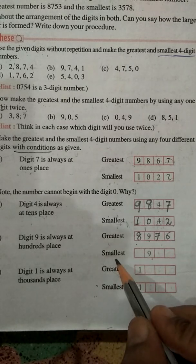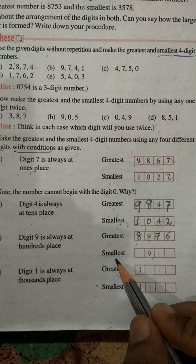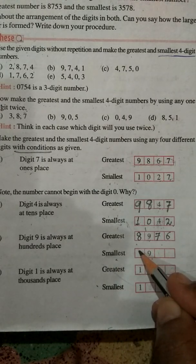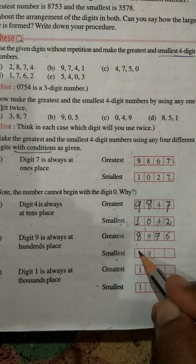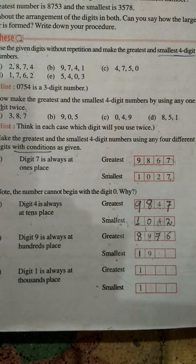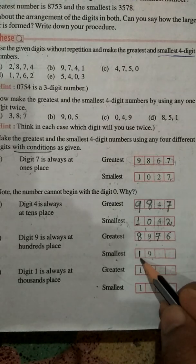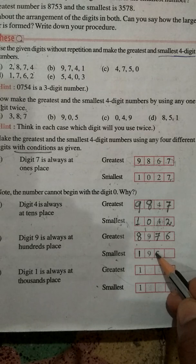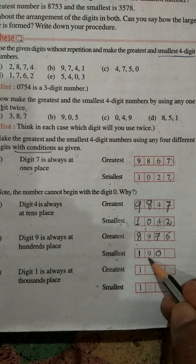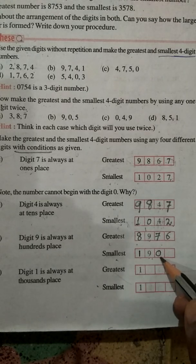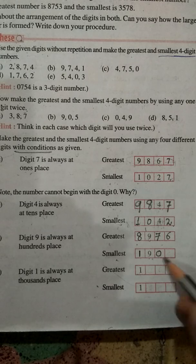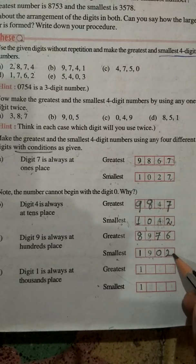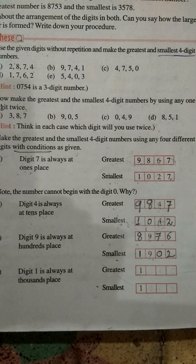To make the smallest number, we know 0 is the smallest but we can't write 0 at the thousands place. So the next number is 1. We write 1, then 9 stays fixed at the 100s place. Then we can take 0 because the 9 position we don't change. The next is 0, and then 2. So the smallest number is 1, 9, 0, 2.